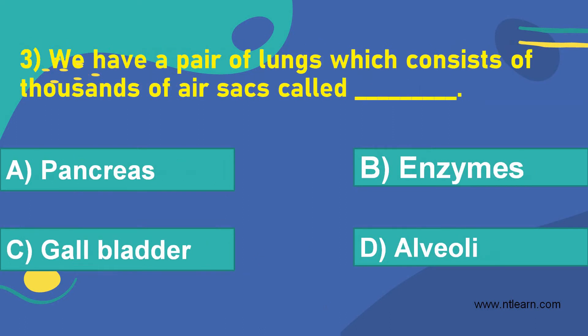Let's move on to the next question. We have a pair of lungs which consist of thousands of air sacs called dash. Option A, pancreas. Option B, enzymes. Option C, gallbladder. Option D, alveoli.